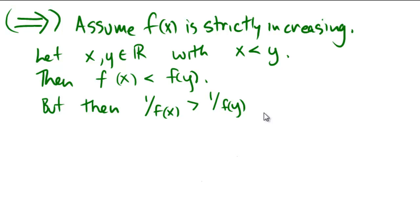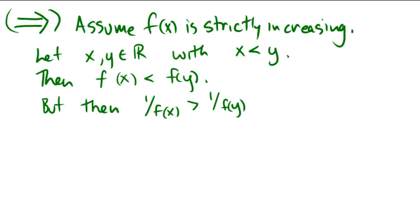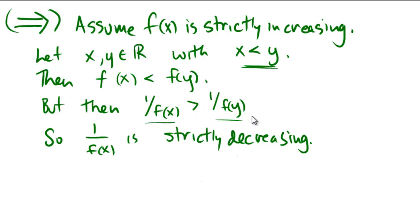The direction of the inequality changed. If we go back and look at our definition of decreasing, in the decreasing definition we do have f of x being bigger than f of y. So literally, what this means is that 1 over f of x is strictly decreasing, because we started off with x and y with x less than y, and we ended up with 1 over f of x bigger than 1 over f of y. The inequality sign switched, and our function must be decreasing.